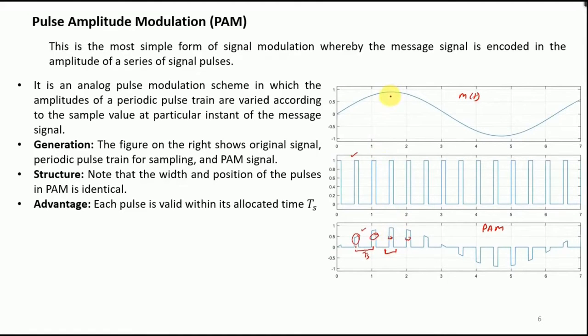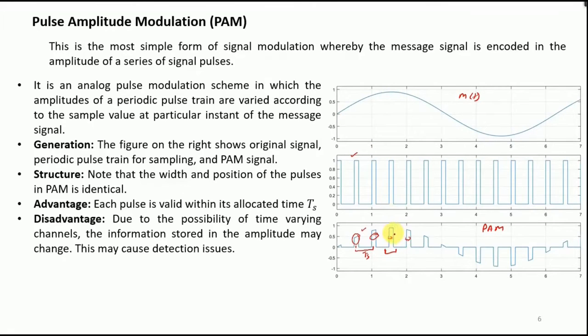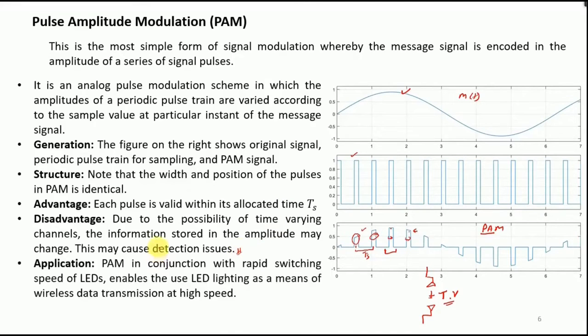But this is also a disadvantage. The disadvantage is that if you're sending the PAM signal over the channel, so this means that you have sent this by means of an antenna over a channel and then you're going to receive it. So if this channel is time varying, this would mean that the amplitudes would be changed, and if these amplitudes will change, we know that the information, that is the message signal, is embedded in the amplitude of the PAM signal. So if the amplitude changes, we cannot recover back our original message signal. So we would have some issues in terms of detection.